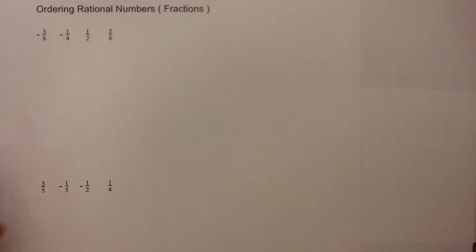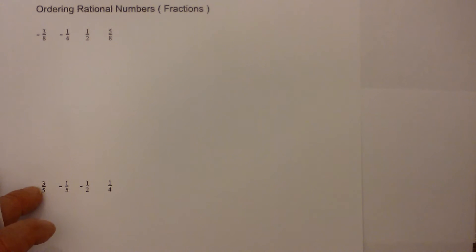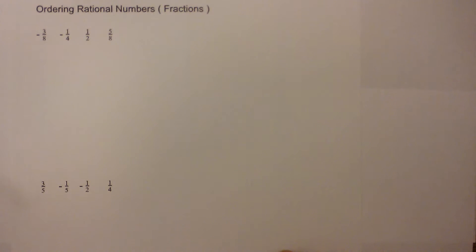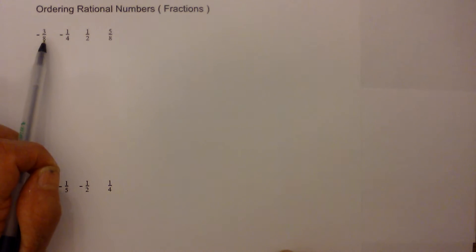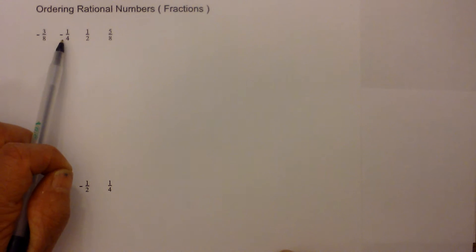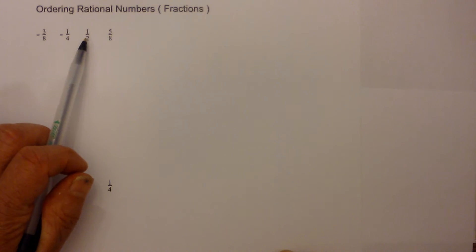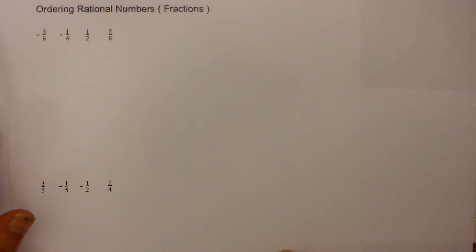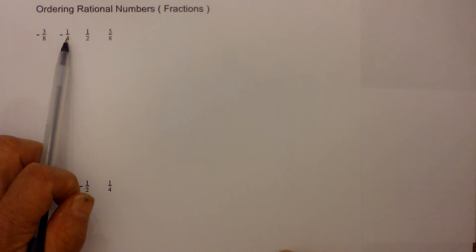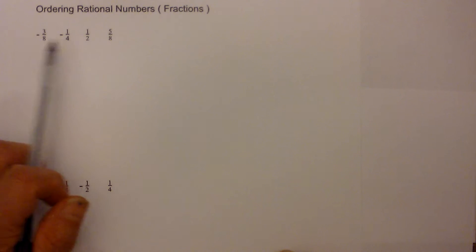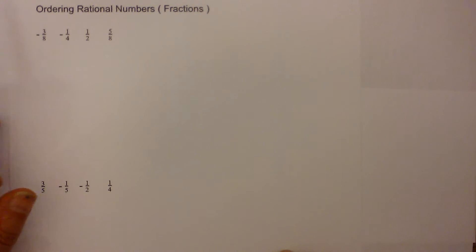My name is MumuMath and Science and this is Ordering Rational Numbers. In this particular example I'm going to order fractions from least to greatest. Let's start with these four fractions: three eighths, one fourth, one half, and five eighths. They don't have common denominators, so I don't really know how to order them.